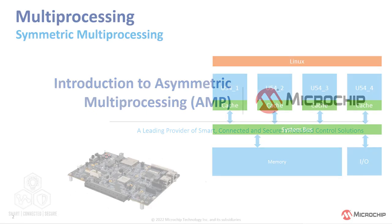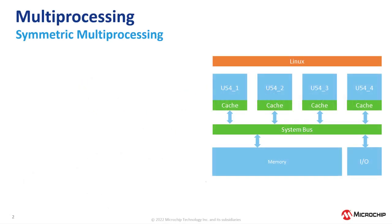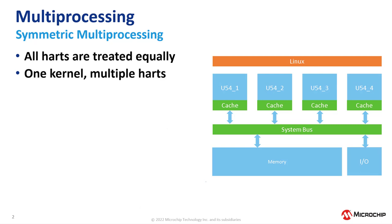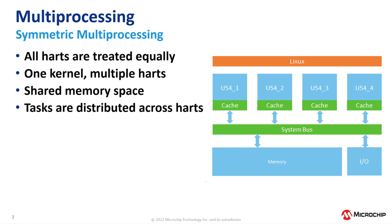In a symmetric multiprocessing architecture, all cores are treated equally. We have a single instance of an OS, or one kernel, running across multiple cores. These cores have access to a shared memory area. The operating system is in charge of distributing tasks across these cores.